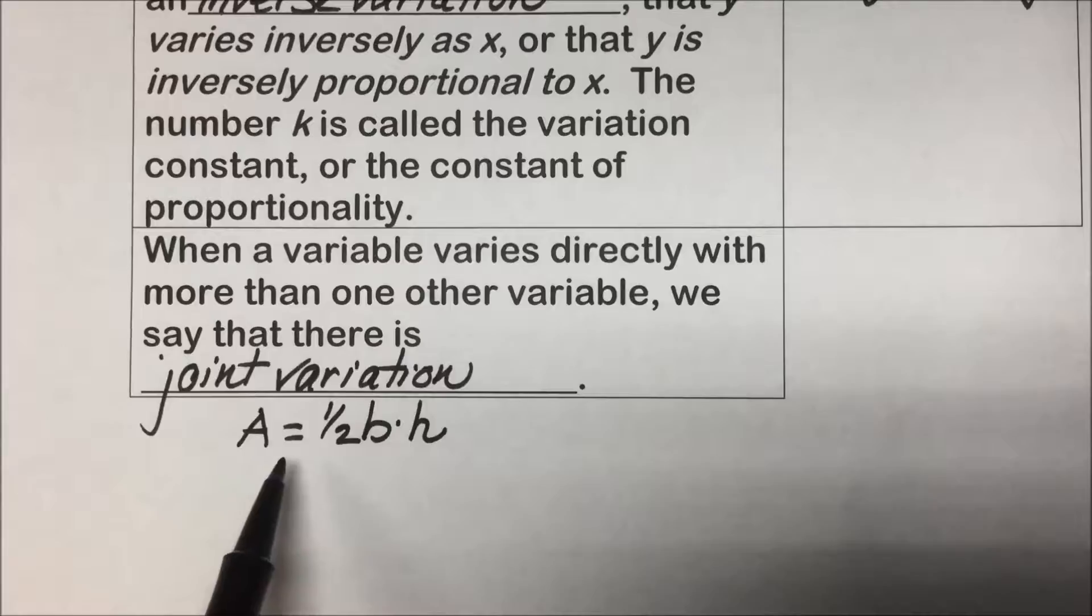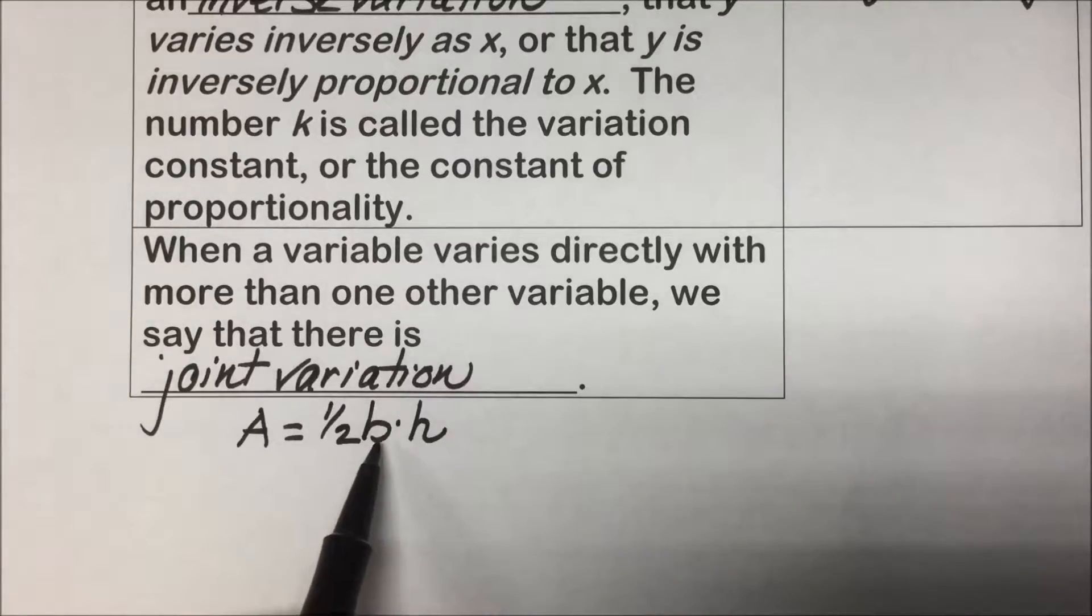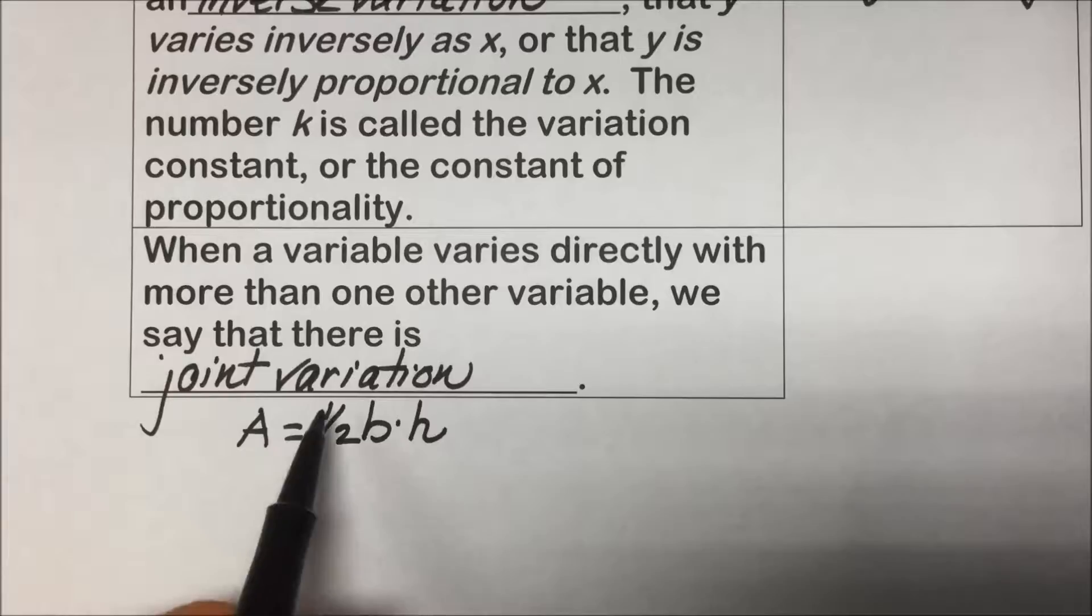The area has a joint variation between the base and the height. And the silent factor here needed to give us the correct value for the area of a triangle is the one-half. We can think of that as our constant of variation.